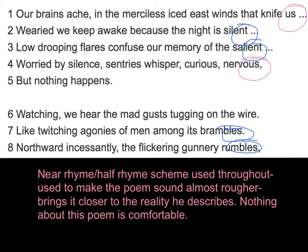The next structural device is the near-rhyme or half-rhyme scheme used throughout the poem. For example, 'us' and 'nervous', 'silent' and 'salient', 'brambles' and 'rumbles' — these are not full rhymes. These near-rhymes and half-rhymes make the poem sound ugly and rougher, because Wilfred Owen is trying to express the reality of war. He makes the poem uncomfortable for the reader, and that includes his rhyme scheme.